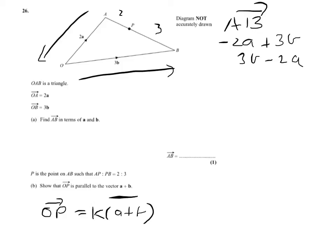So let's try and express OP. From O to P, we're going to go OA plus AP. So OA is going to be 2A, so we've got 2A plus. Now we're going to be AP, the whole length AB is 5, AP is 2, so it's going to be 2 fifths of AP.